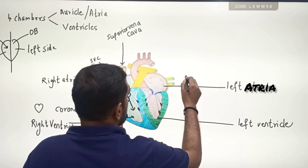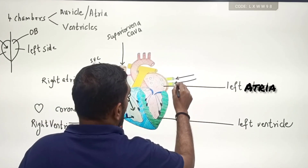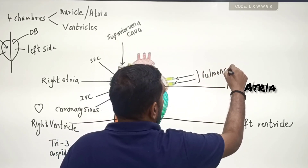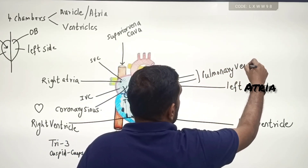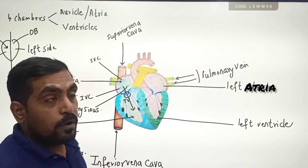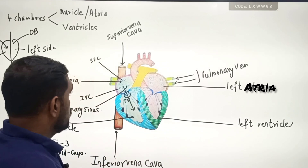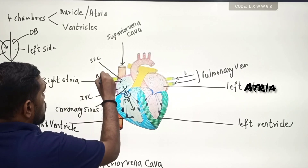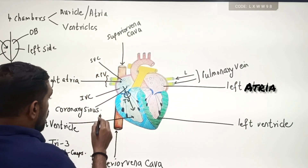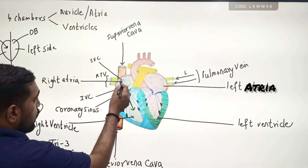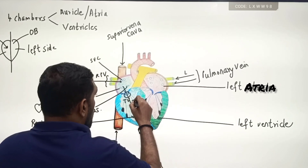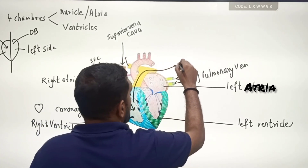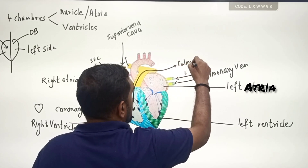The left atria receives oxygenated blood from four openings. This is called the pulmonary vein — the only vein to carry oxygenated blood; all other veins carry deoxygenated blood. You have the left pulmonary vein and the right pulmonary vein. When deoxygenated blood passes from the right atria into the right ventricle, it gets pumped into the lungs by the pulmonary artery.